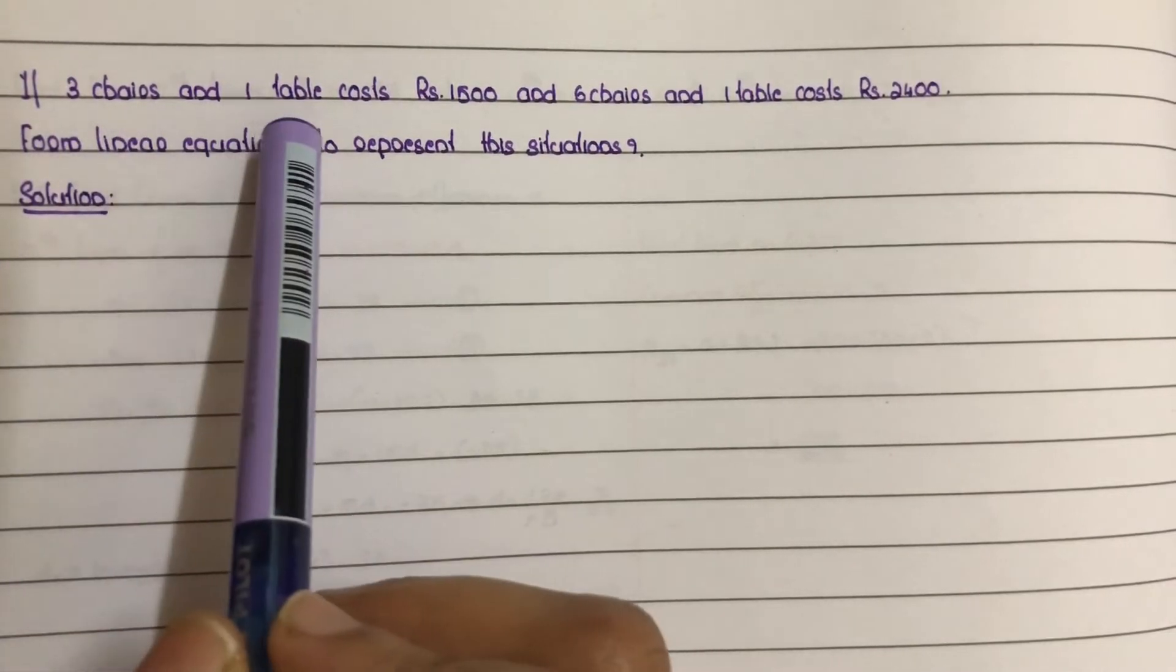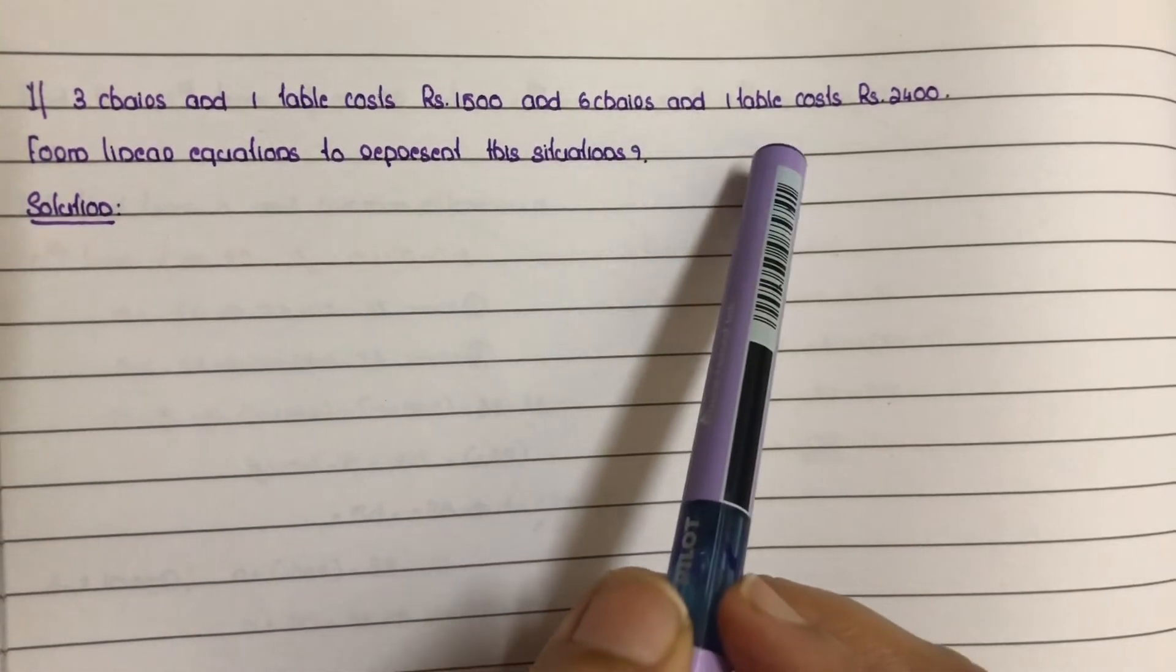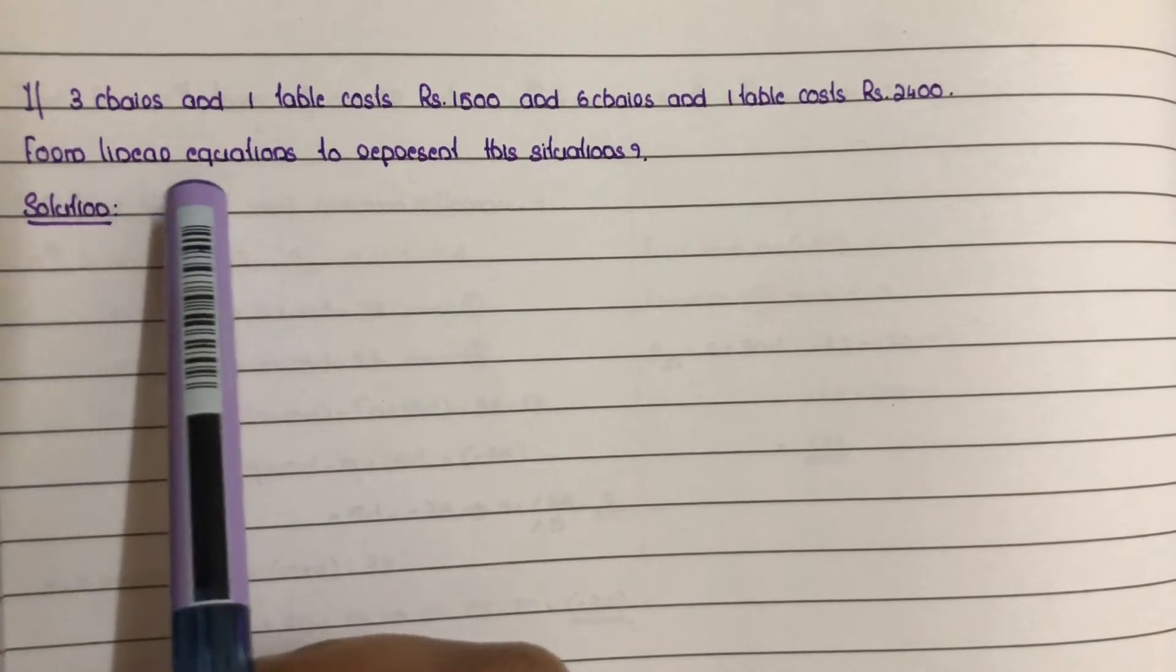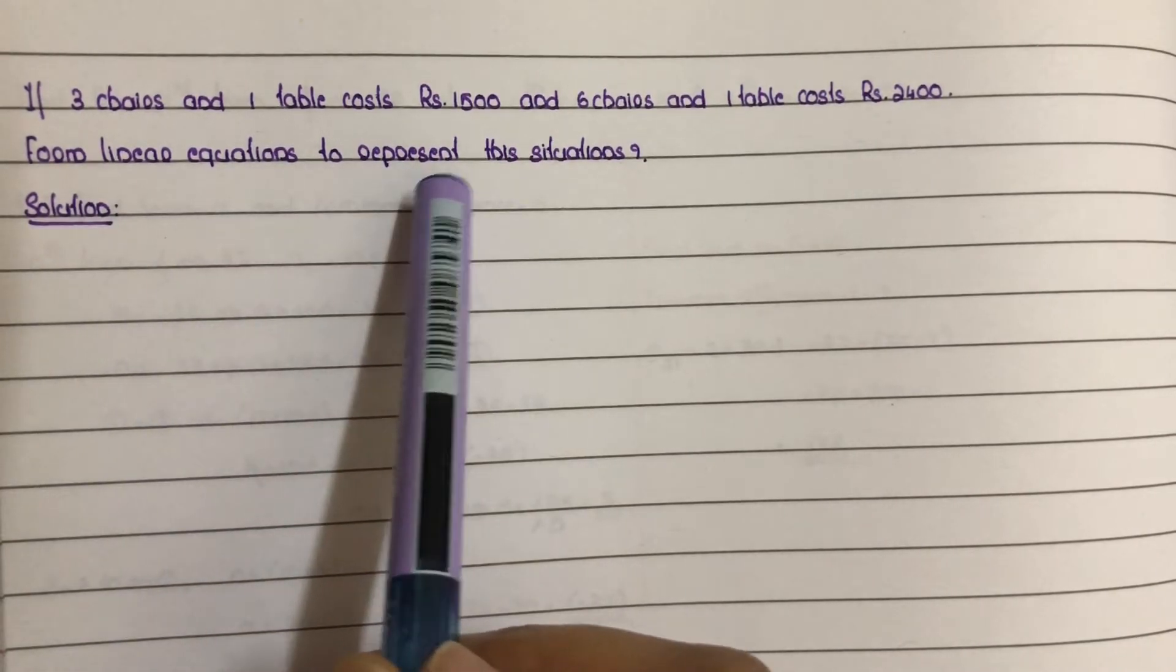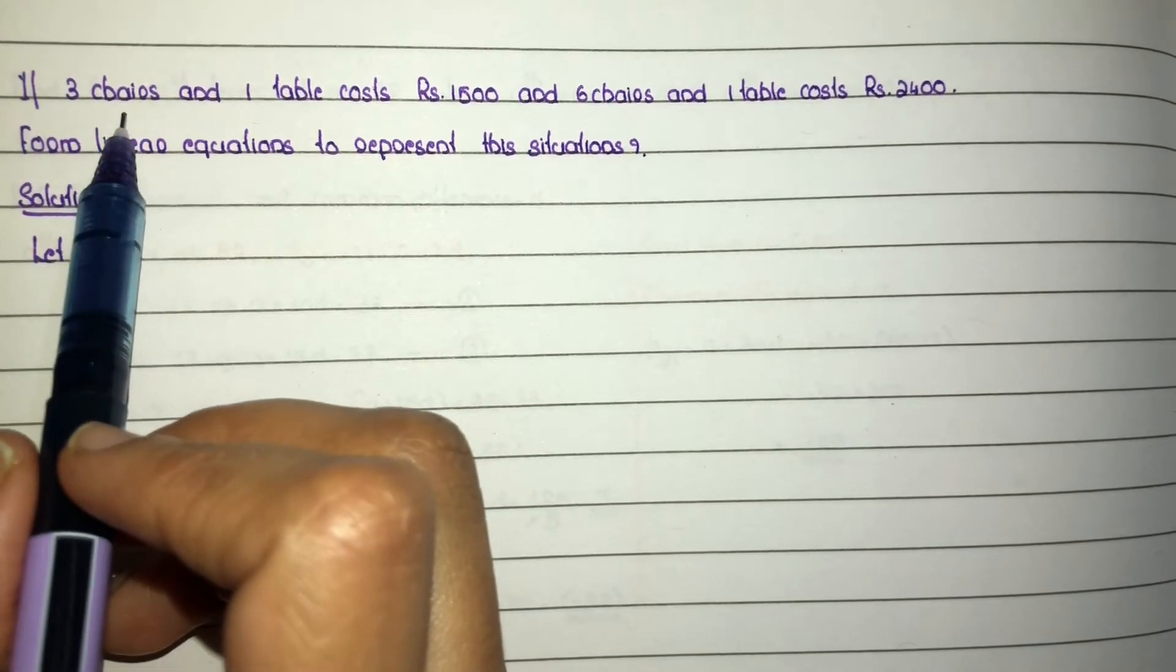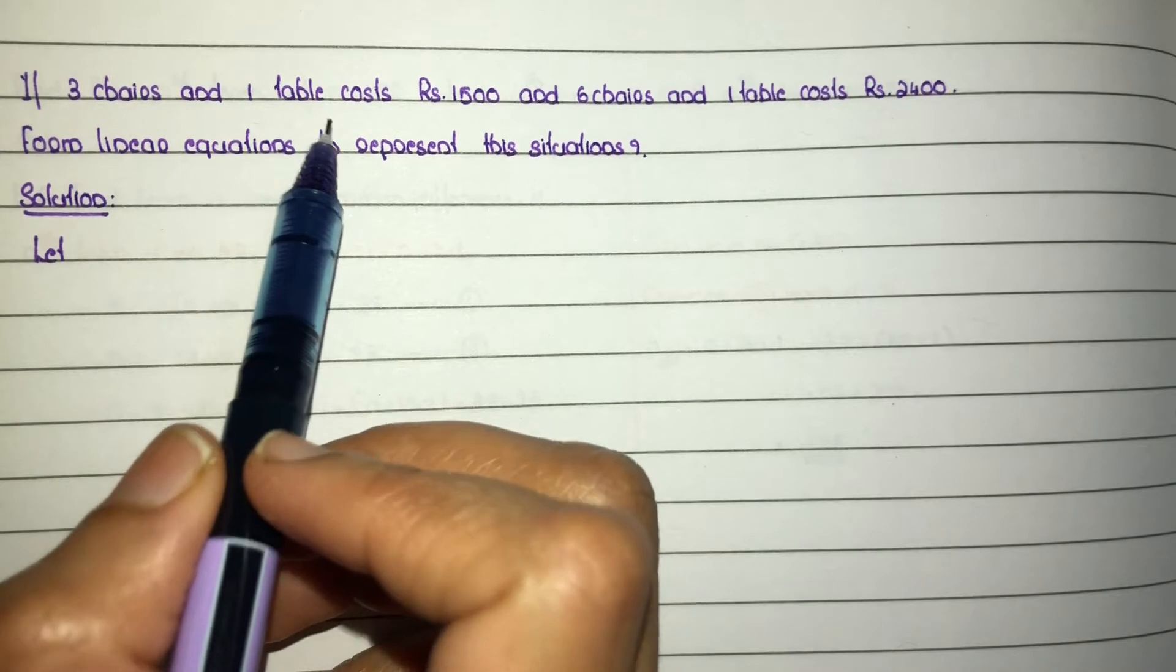If three chairs and one table cost rupees 1500, and six chairs and one table cost rupees 2400, form linear equations to represent this situation. First step: one chair costs x, one table costs rupees y.